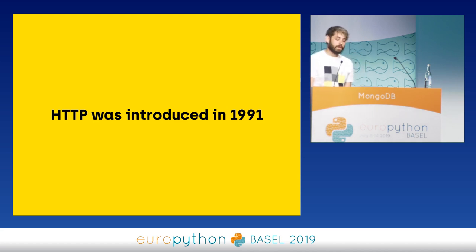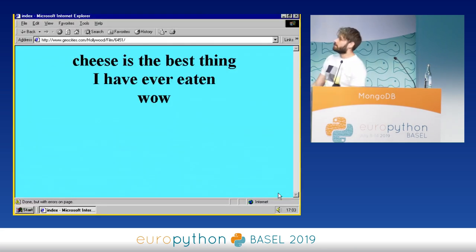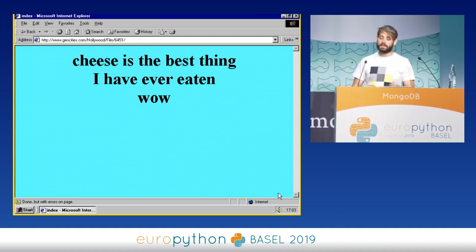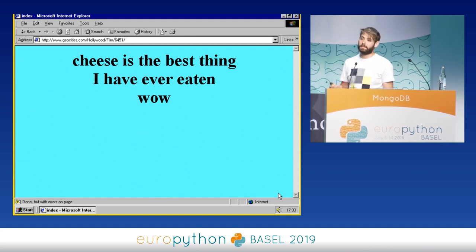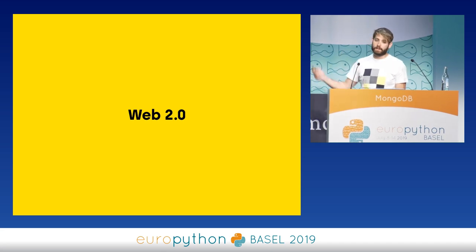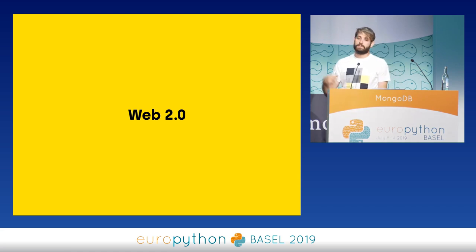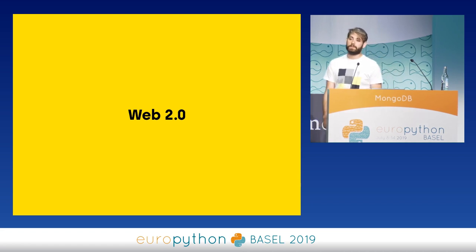HTTP was introduced in 1991, and then after that we've seen things like Geocities, which allowed people to upload websites online without having to know what a server is. For me, that was the start of the web as we see it now. Then in 1999 and 2000 we had Web 2.0, the second version of the web, where the focus would be more on user-generated content — lots of blogs and personal websites, at a bigger scale, so everyone in the world could do it.